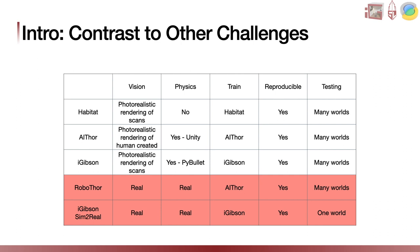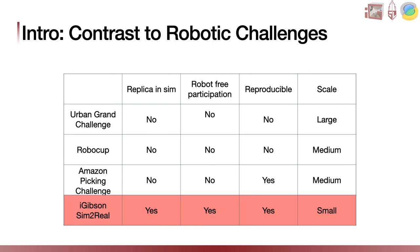This challenge is related to other challenges, in particular the ones within this workshop. We have two other challenges — the first one being Habitat, which is conducted exclusively in simulation and therefore does not provide the physics challenges we have in our challenge. The second challenge is RoboThor, which is conducted in a real world setting. The difference is that RoboThor uses a simulator based on computer-generated worlds of homes, while our simulator uses scans of real buildings. While embodied AI challenges have a relatively short history in the computer vision community, in the robotics community conducting challenges in the real world has a longer history.